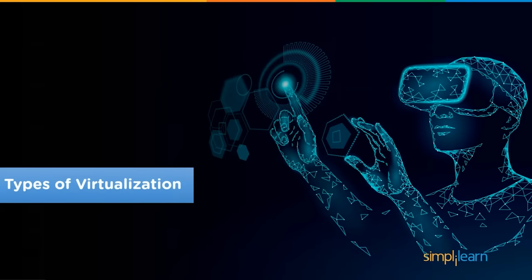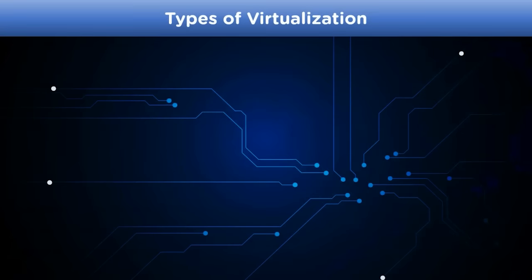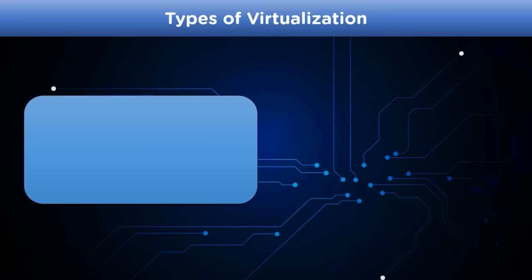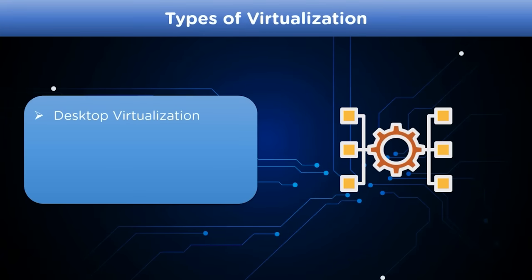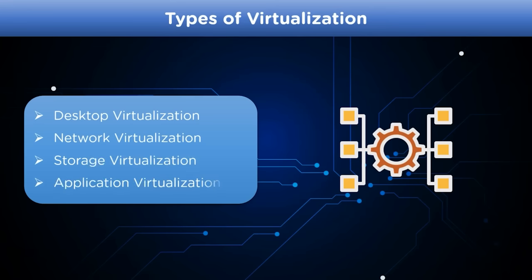Now that we understand the different types of hypervisors, let's look at the types of virtualization available. The main types are: desktop virtualization, network virtualization, storage virtualization, and application virtualization. Let's take a look at them one by one.